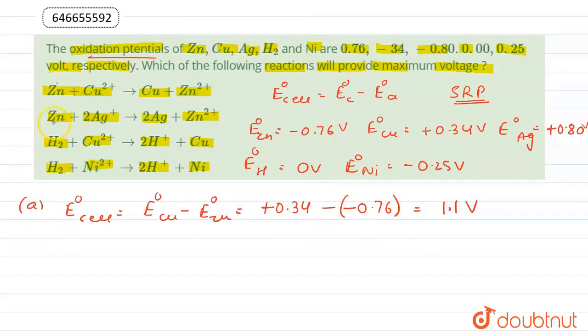In the second reaction, zinc is getting oxidized and silver is getting reduced. So here E°cell becomes E°silver - E°zinc: +0.80 - (-0.76). On solving this we get the value 1.56 volts.